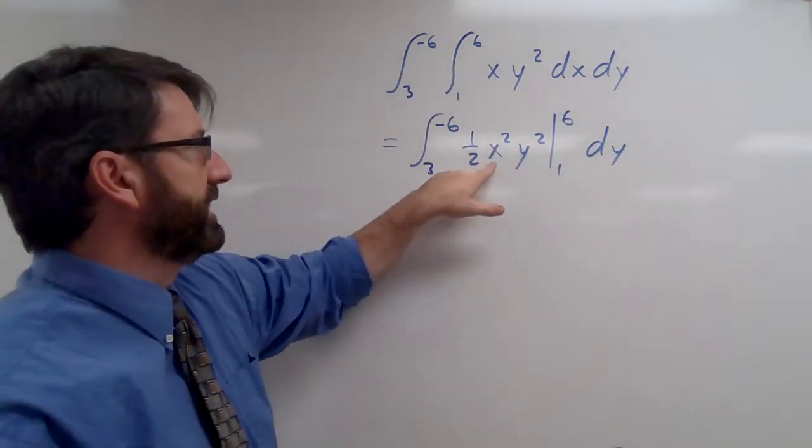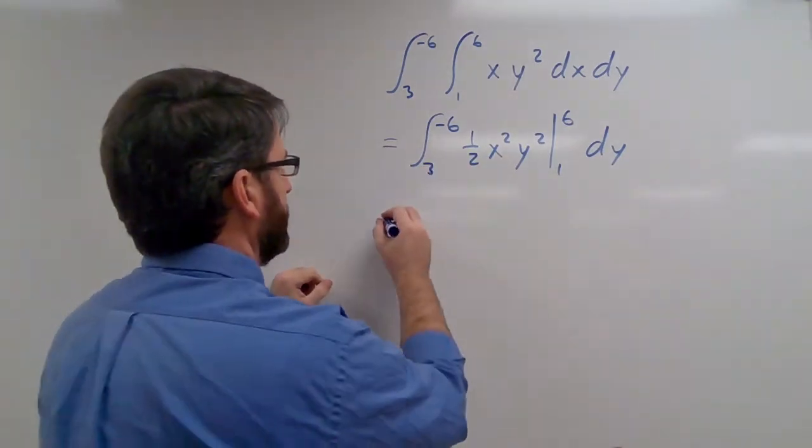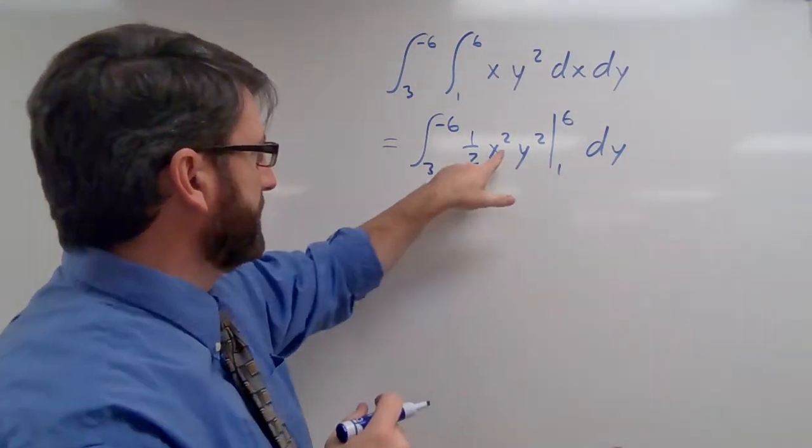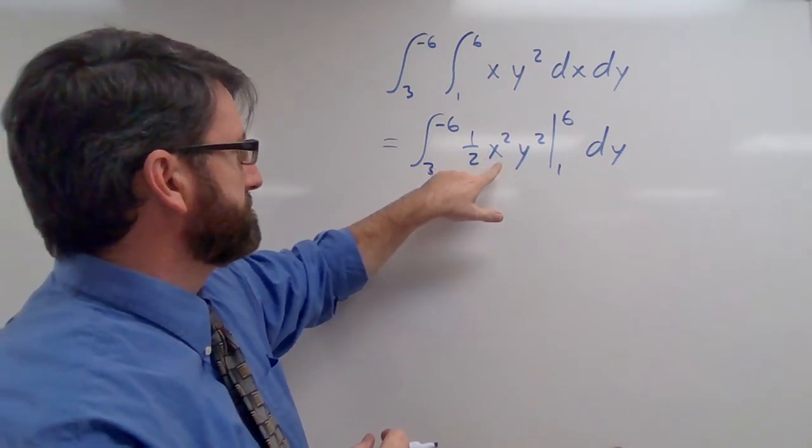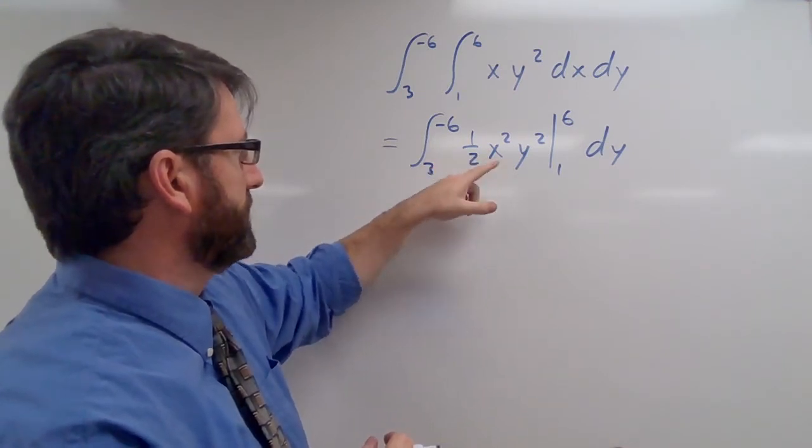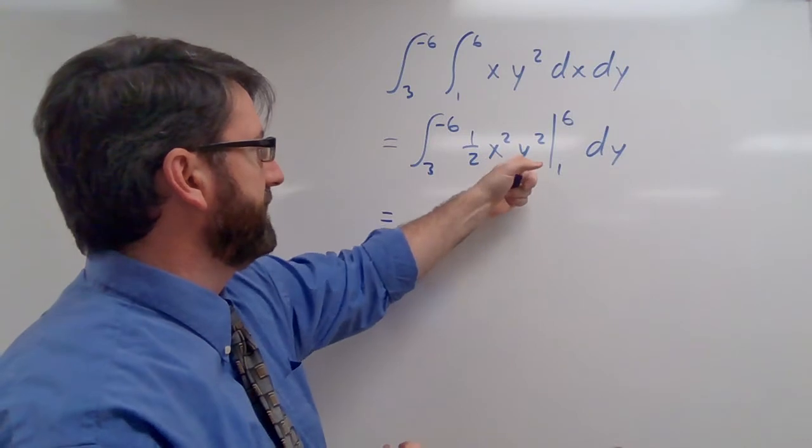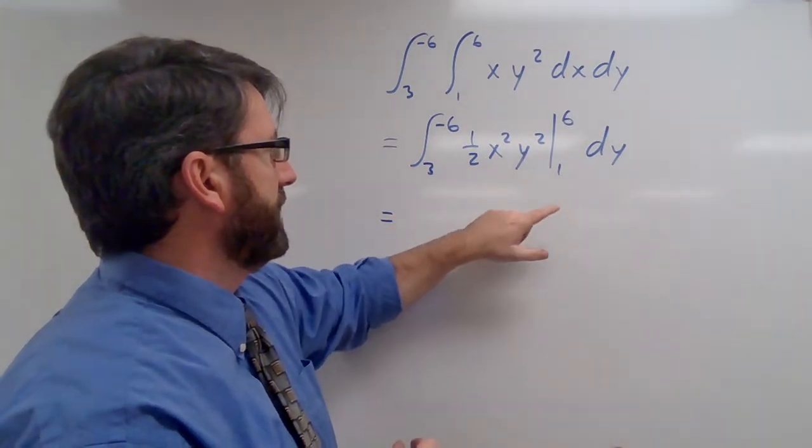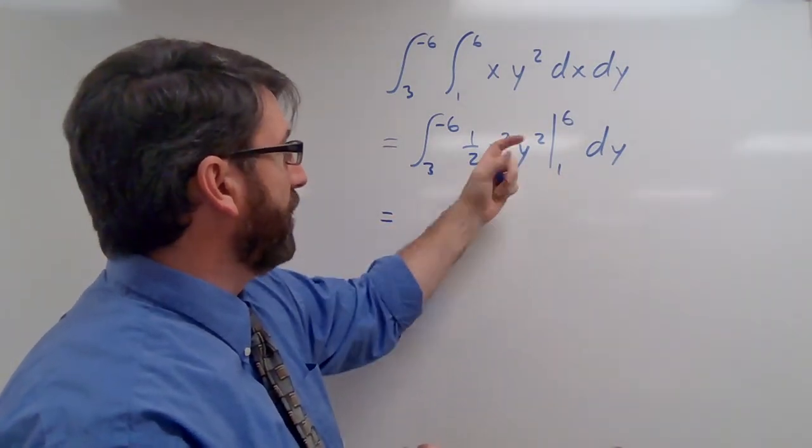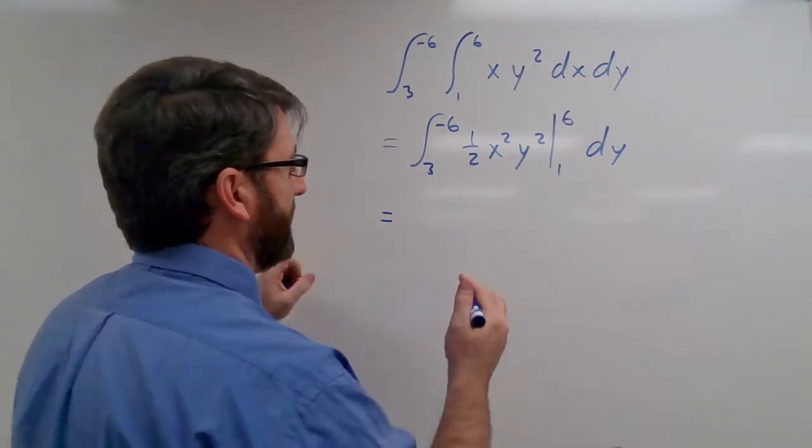All right, so if we plug in 6 for x squared here, this is going to be 36 halves or 18 y squared minus 1 half y squared.